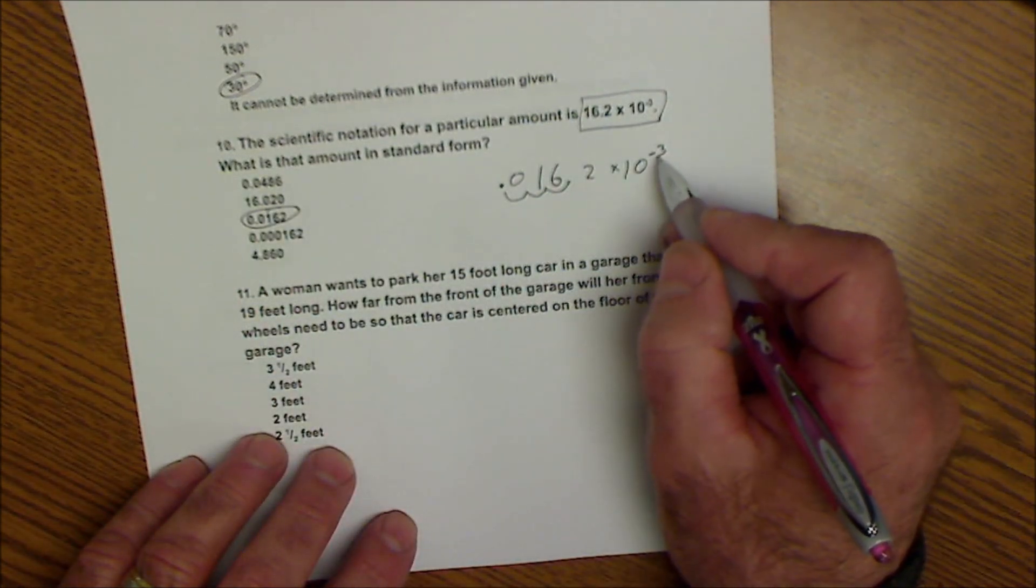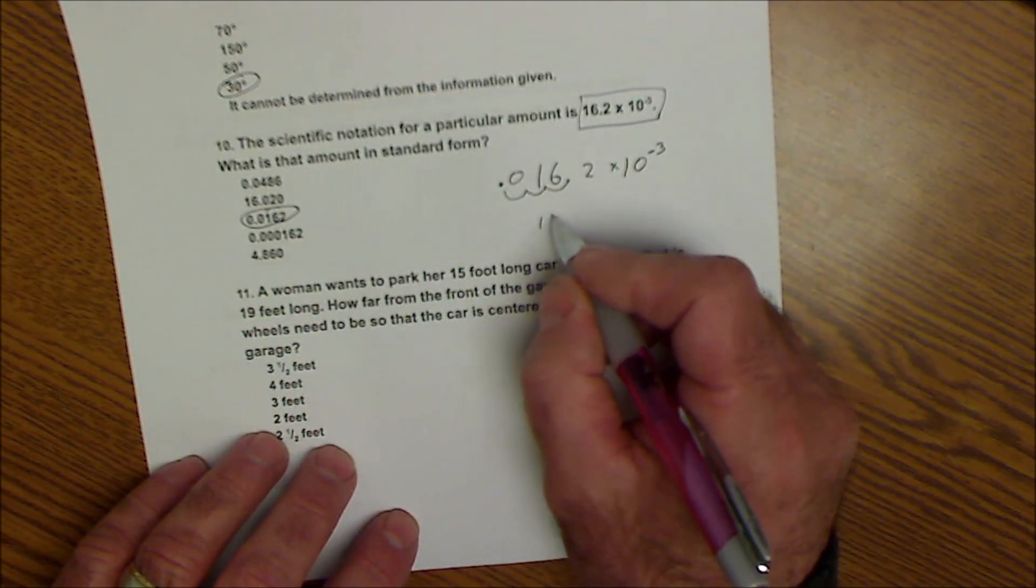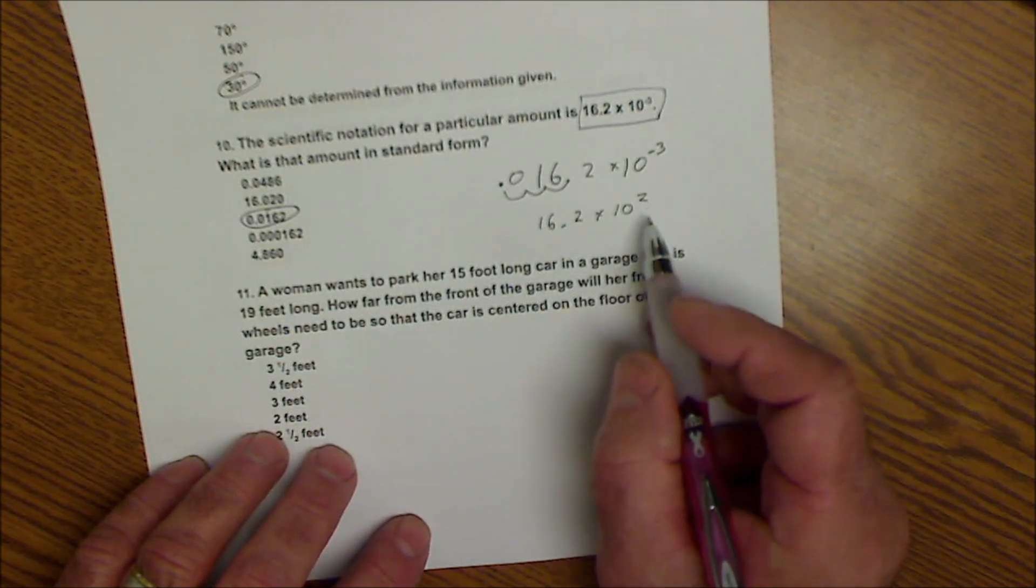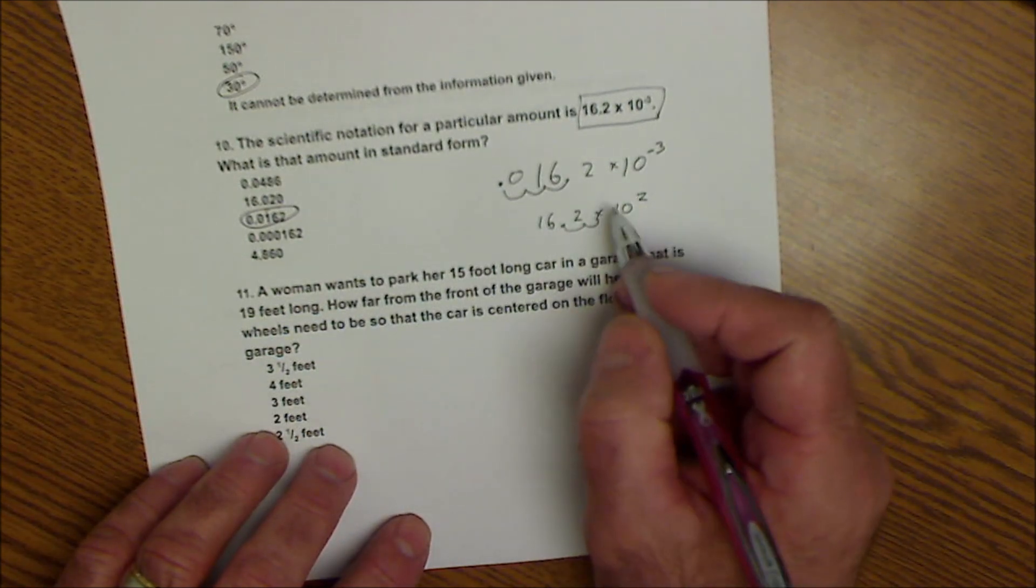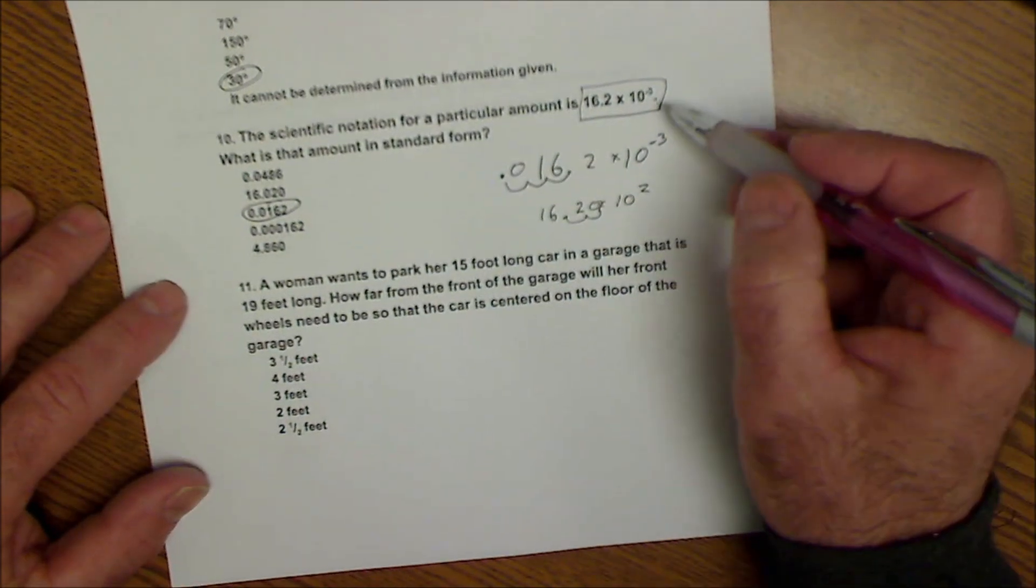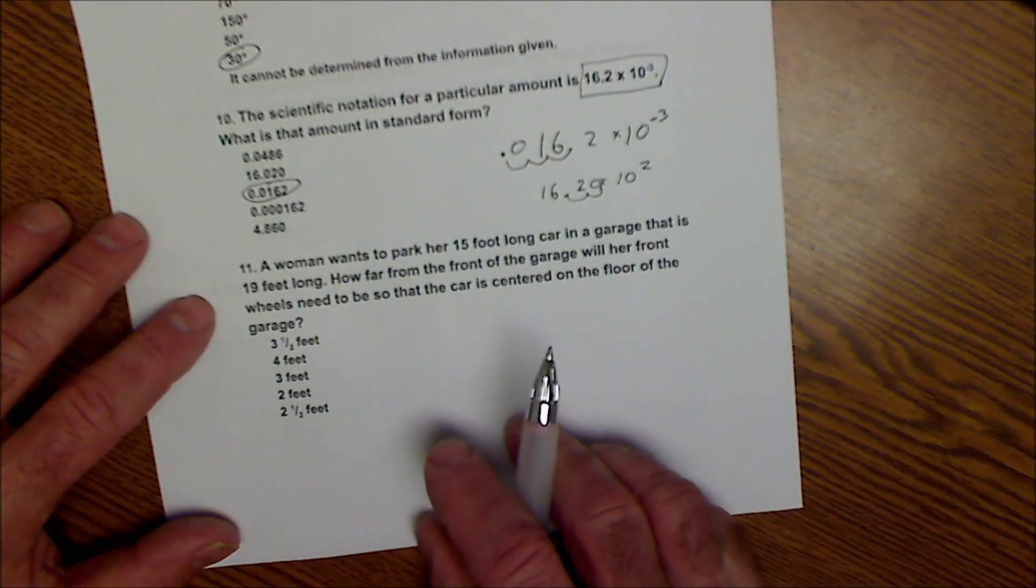If it was positive, I would go over to the right. So if I had 16.2 times ten to the power of two, I go over one, two, and get 1,620. So scientific notation is a way to keep track of the decimal place so you don't have to write out a lot of digits.